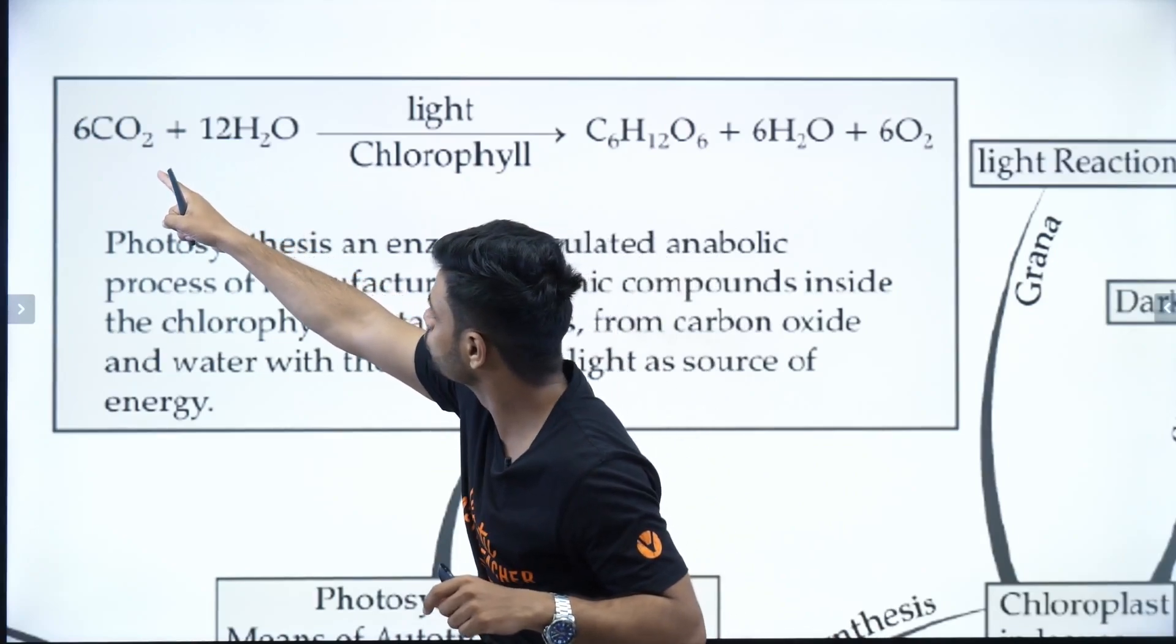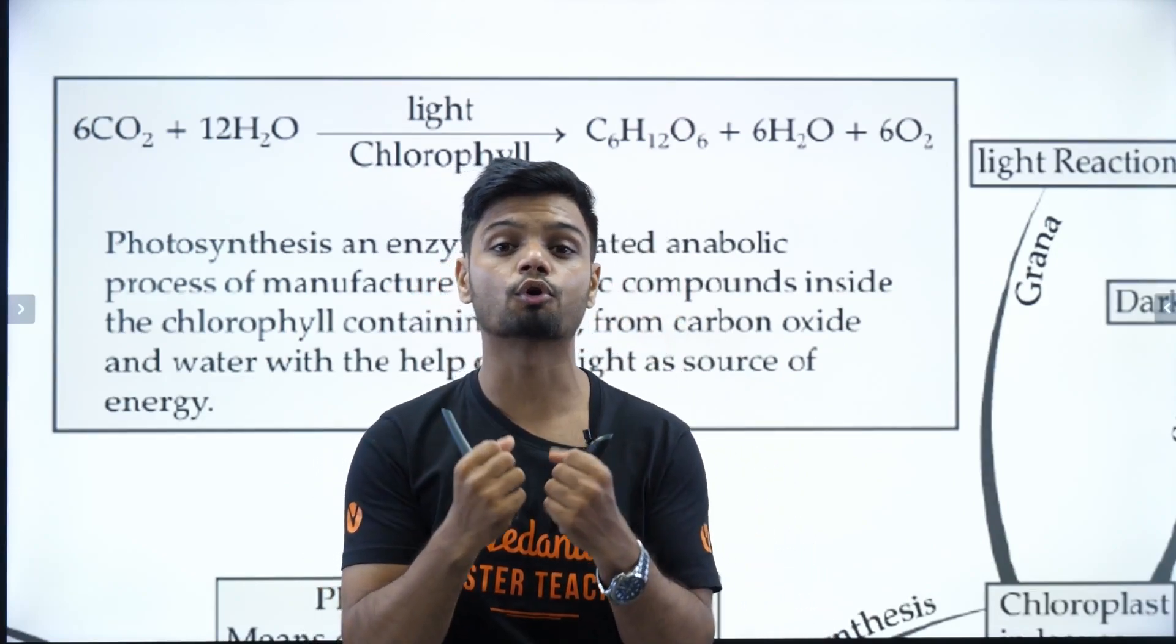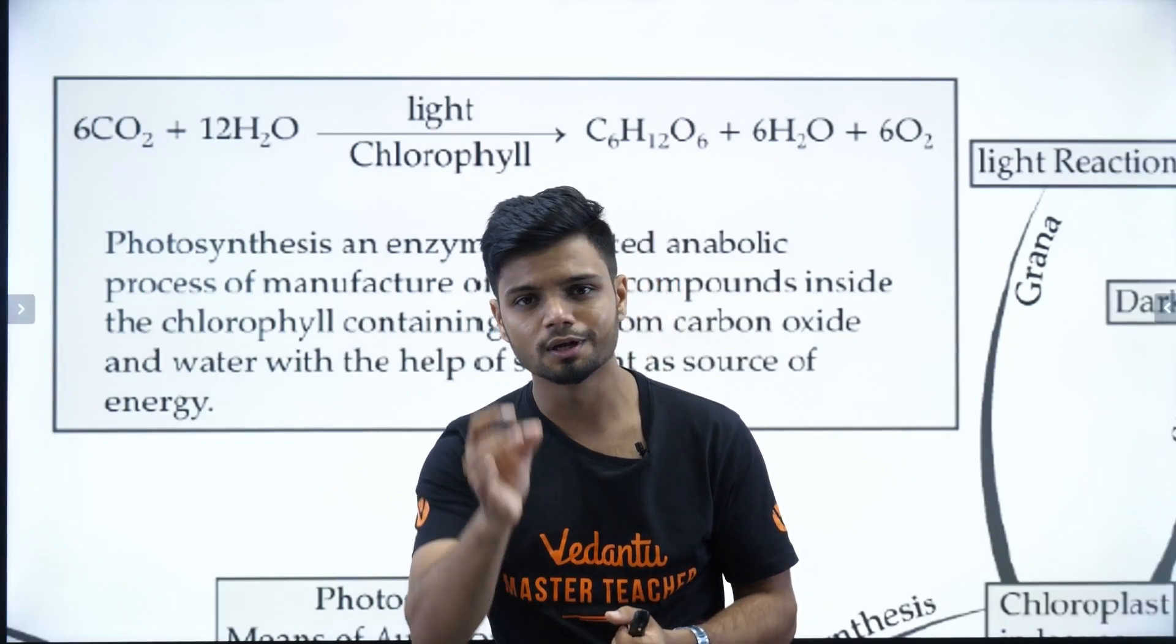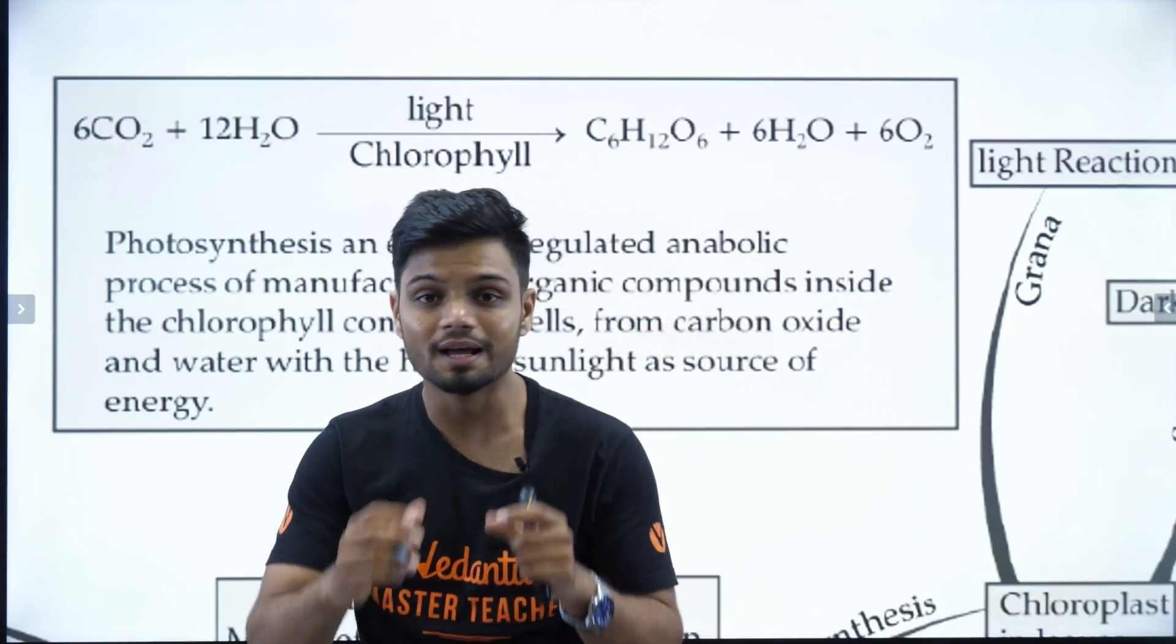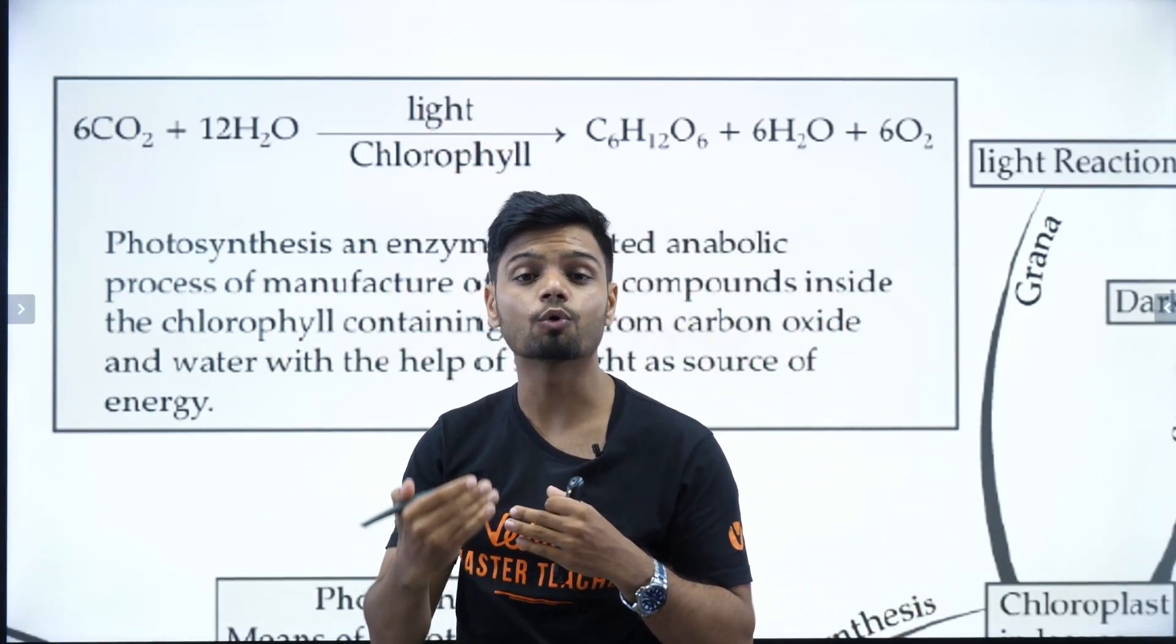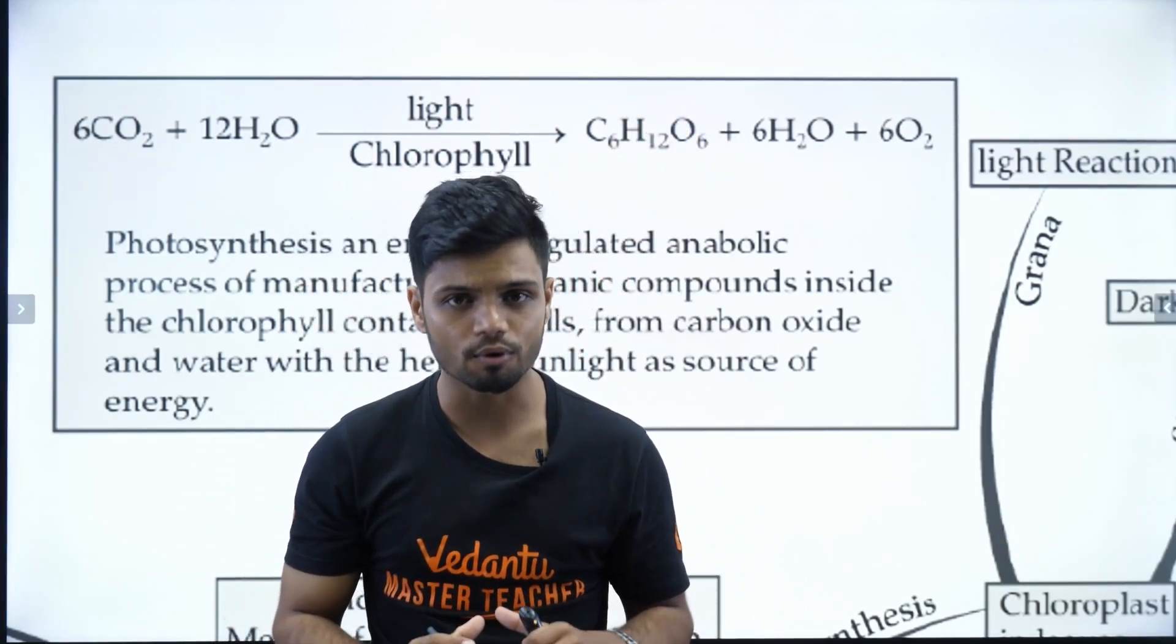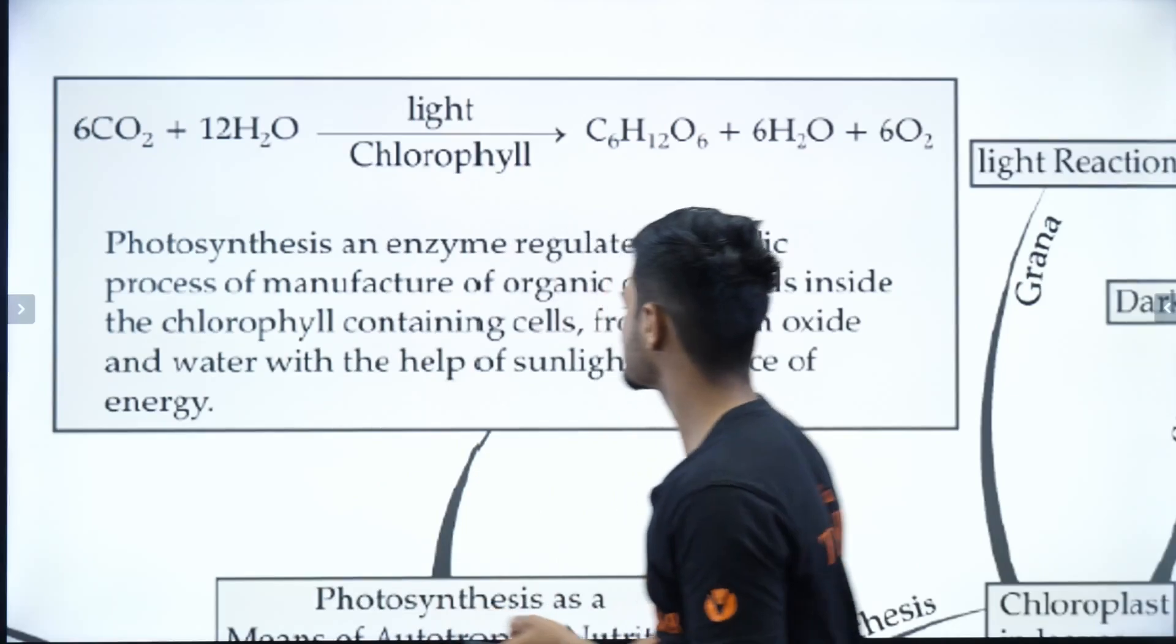The first point here is CO2 is getting reduced to glucose. Now what is the meaning of reduction? The meaning of reduction is to gain protons or gain of electrons. So CO2 is gaining protons and it is getting reduced to glucose. But what is the source of these protons? The answer is very simple. That is water. So first, it is a reduction process. The second point here is the light energy. In this reaction light energy is being consumed. So it is an endothermic reaction. The third point here is it is an anabolic process. That is from a simple substance a complex substance has been produced. If I want to summarize the entire process, in photosynthesis, inorganic substance is getting converted to organic substances.